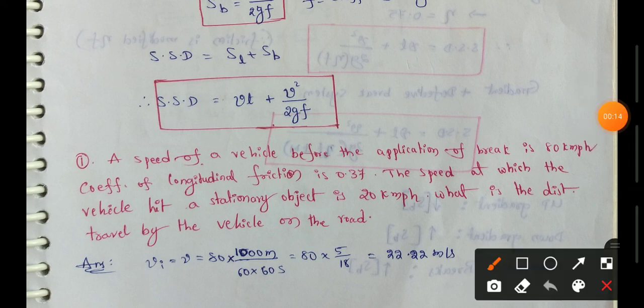So first one, the speed of vehicle before the application of brake is 80 kmph. So if vehicle is initial moving speed is 80 kmph, that means brake applied.